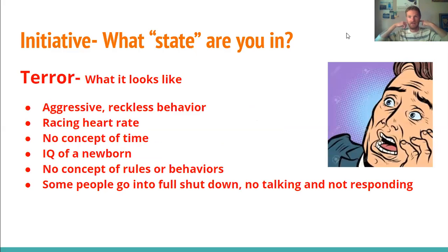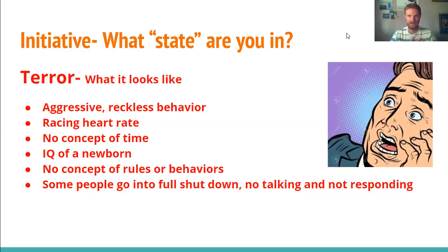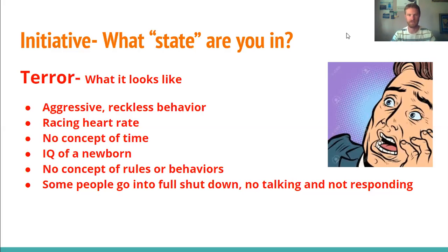The last one is terror. That's when you're down in your brain stem — the reptile brain. You might be aggressive or have reckless behavior and not even know you're doing it. Your heart rate is racing. When you're really angry or really upset and you feel your heart pounding, one way to calm down is to just notice it — be like, whoa, my heart rate is pounding, I need to calm down and breathe so I can go down in my brain states. When you're in your terror state, you have zero concept of time. Your IQ goes all the way down, like a newborn. Adults react like kids sometimes because they're in their terror state.